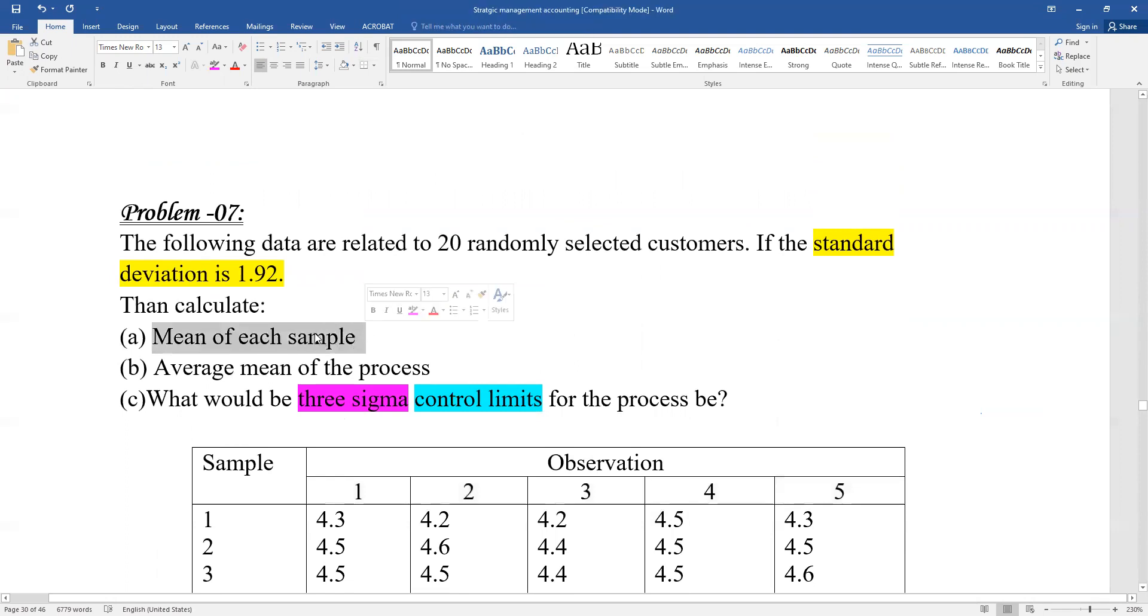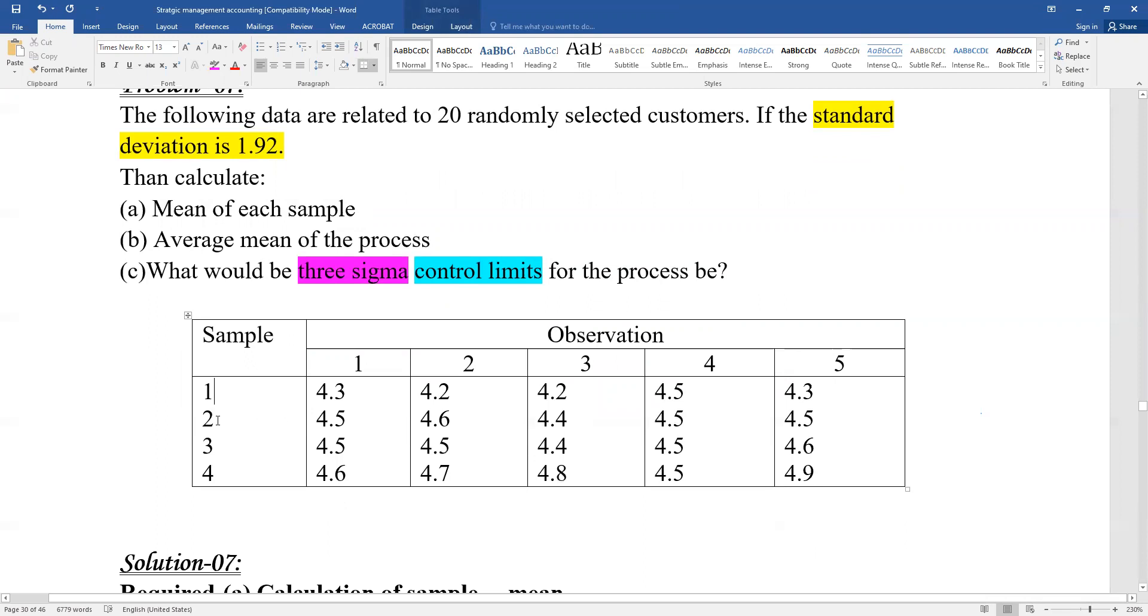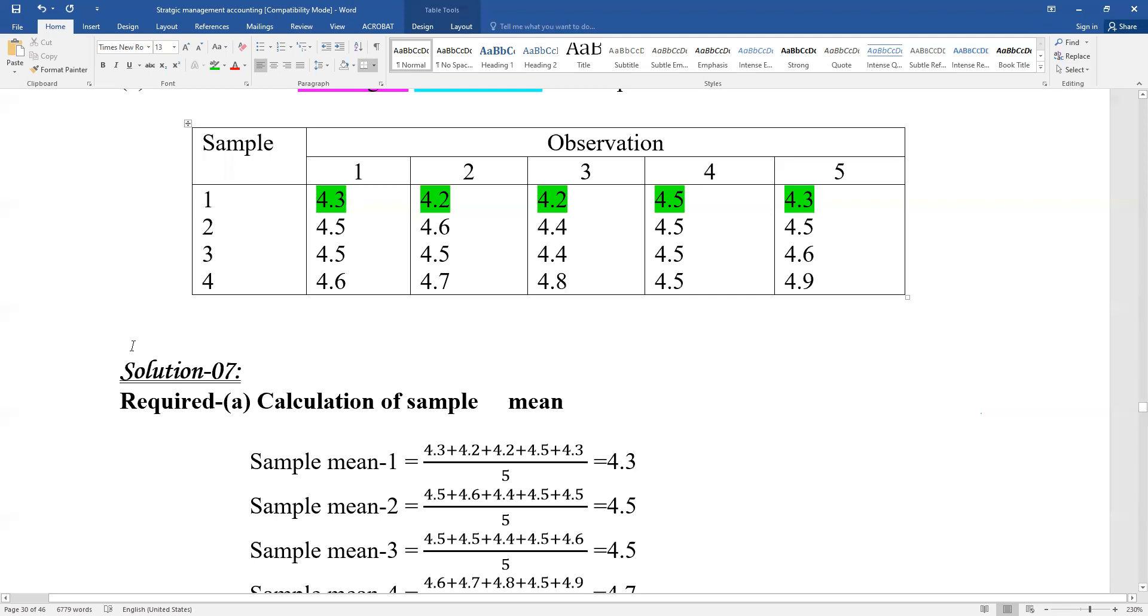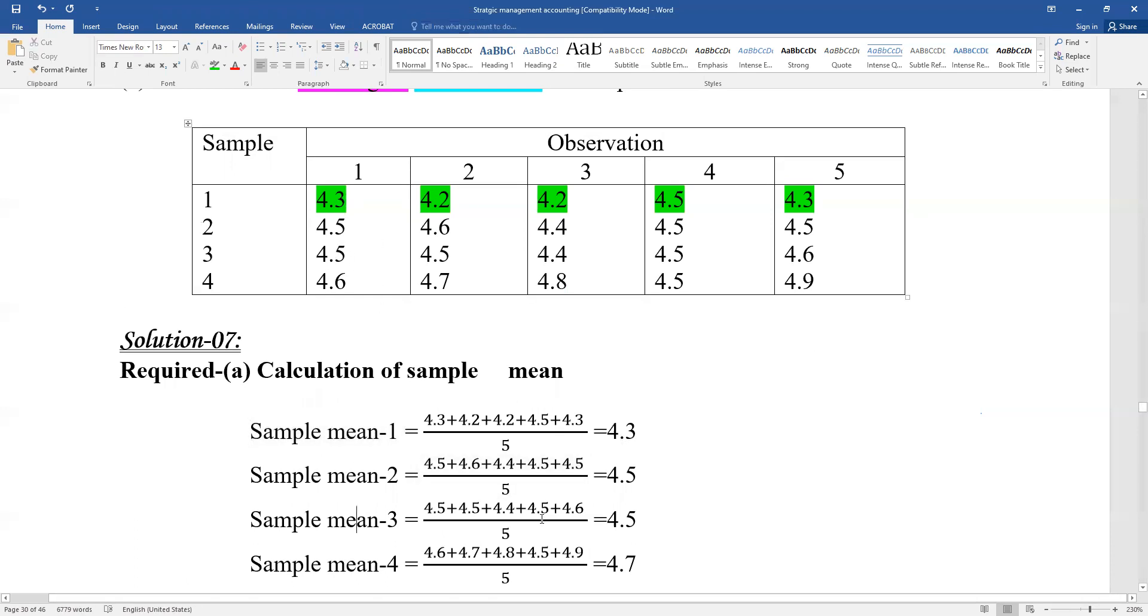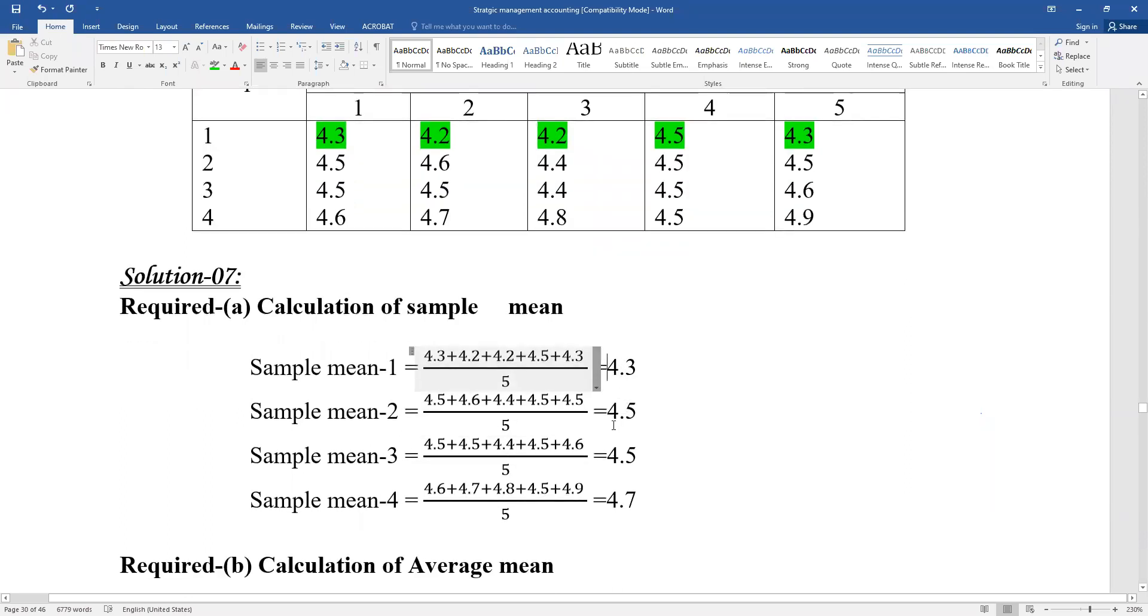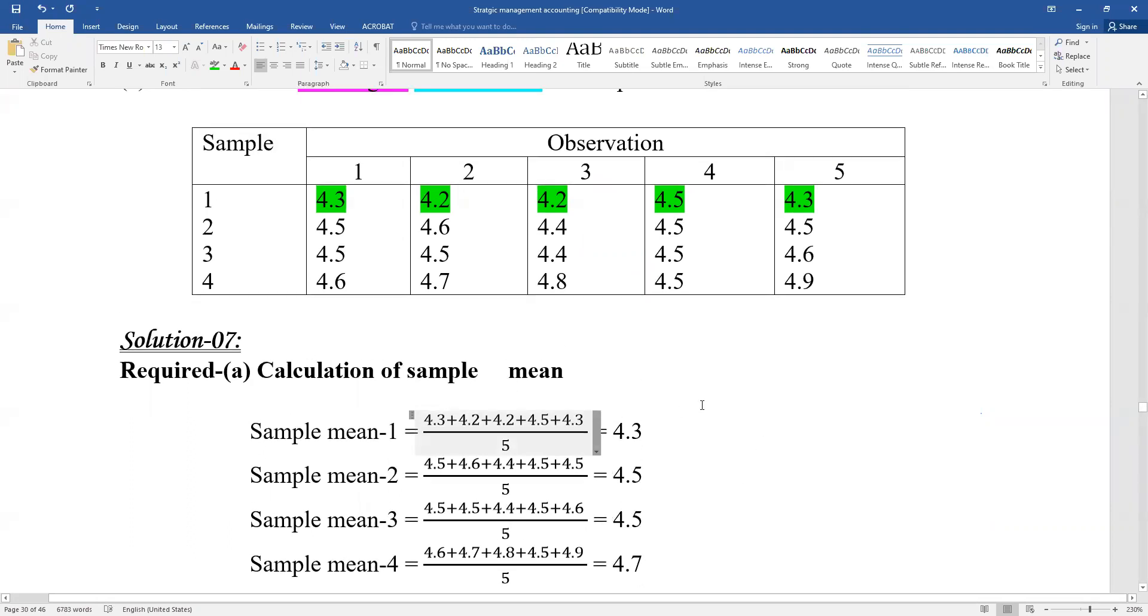Mean of each sample - sample one, two, three, four, that's the sample mean. Sample one mean, sample two mean, sample three mean, sample four mean. Each sample mean is calculated by taking all the observations for that sample and finding the mean.